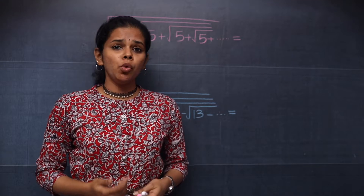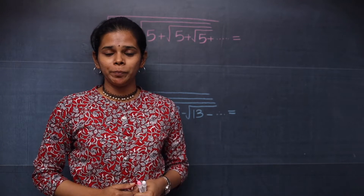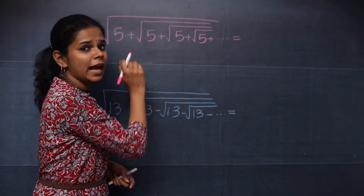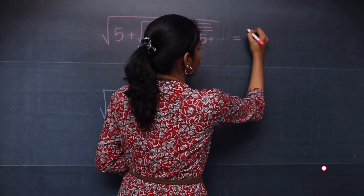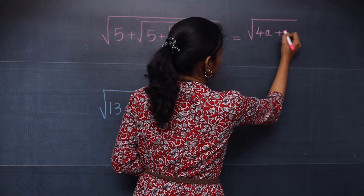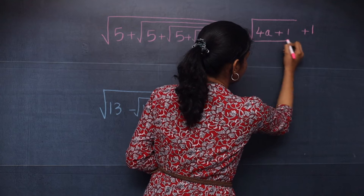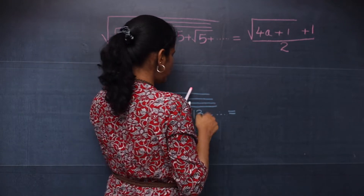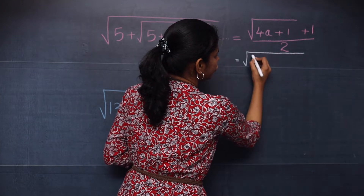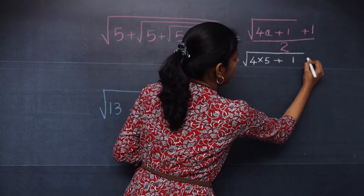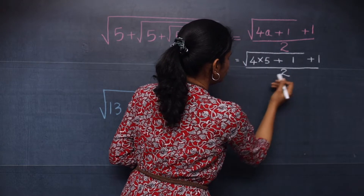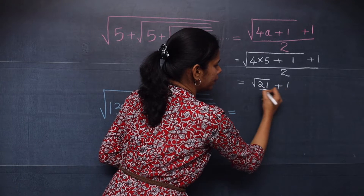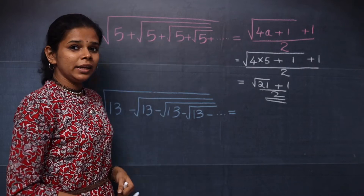Now let's move on to the second type. When you take the number 5 and find its factors, you can't find a pair of factors whose difference gives you 1. In such cases you apply a formula. Since the operation is addition, you use the formula: (√(4a+1) + 1) / 2, where a is the number given in the question, which is 5. Substituting: (√(4×5+1) + 1) / 2 = (√21 + 1) / 2, which is your answer.